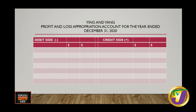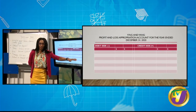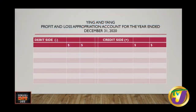All profits — the net profit — along with the interest on drawings that Yang will be paying back, will be entered on the credit side. All the money that is to be shared will be on the credit side. What is then paid out to the partners will be entered on the debit side. The debit side shows decreasing amounts, while the credit side represents profits that have increased over time and which we intend to pay out to our partners.